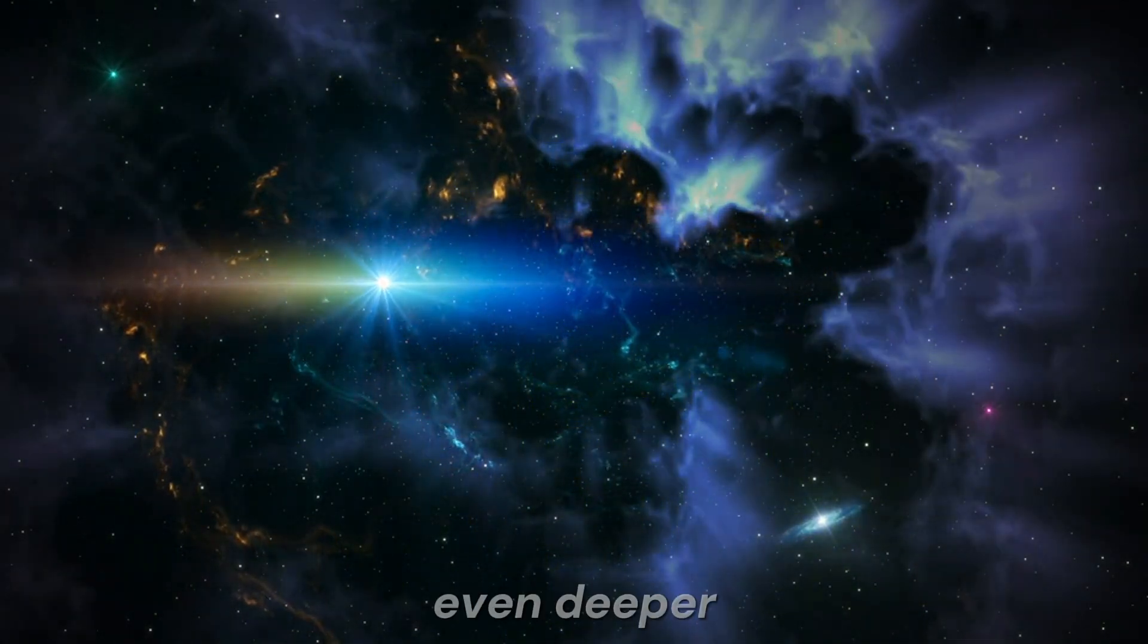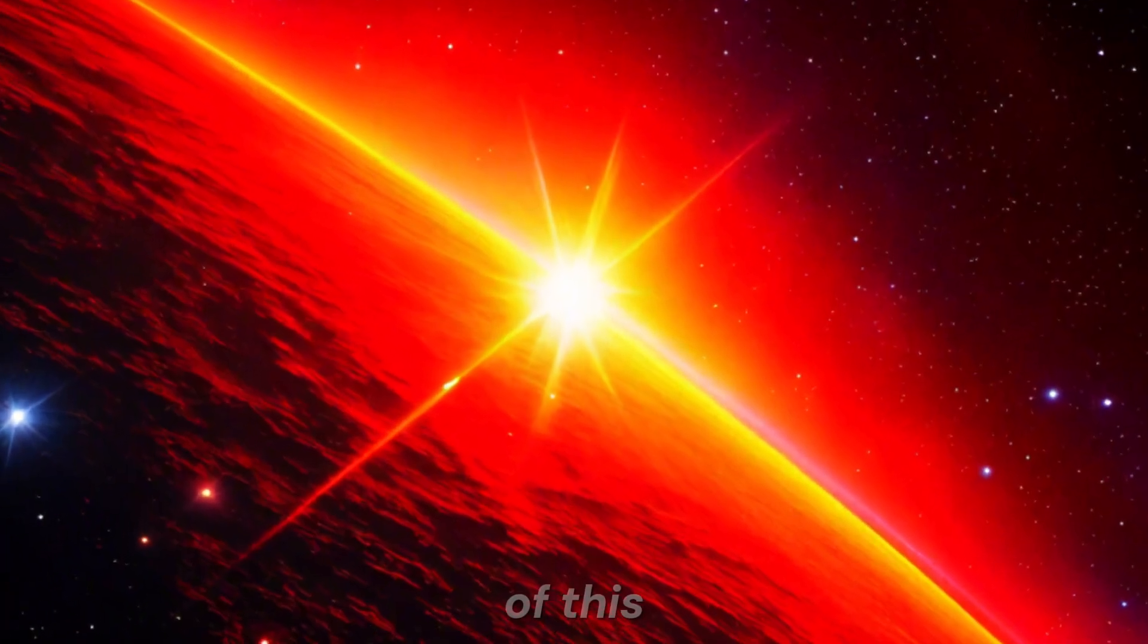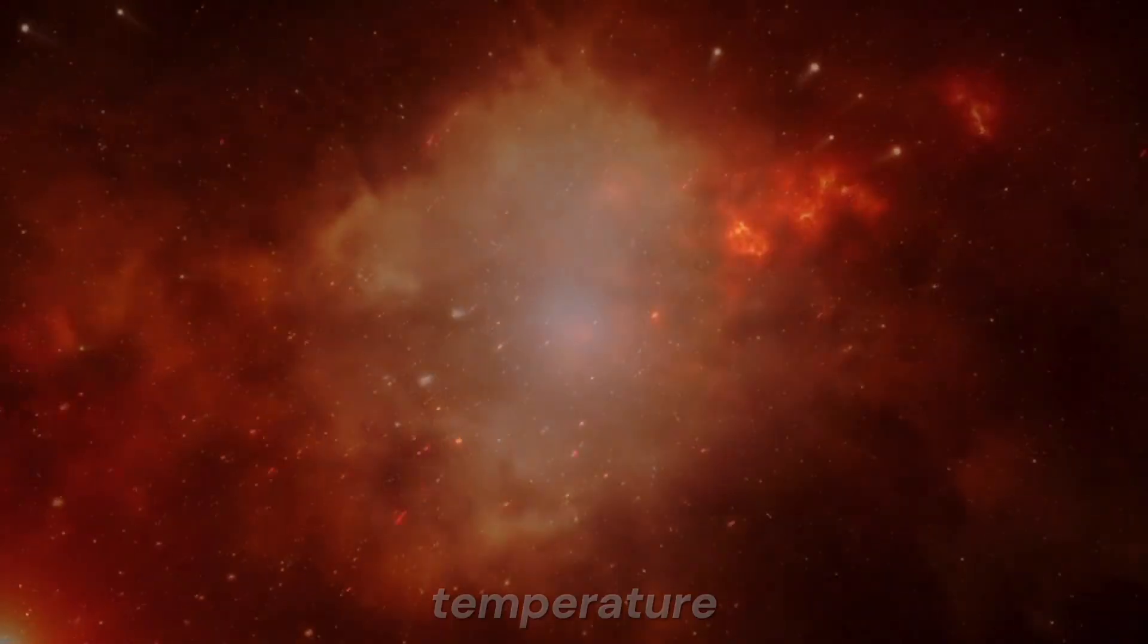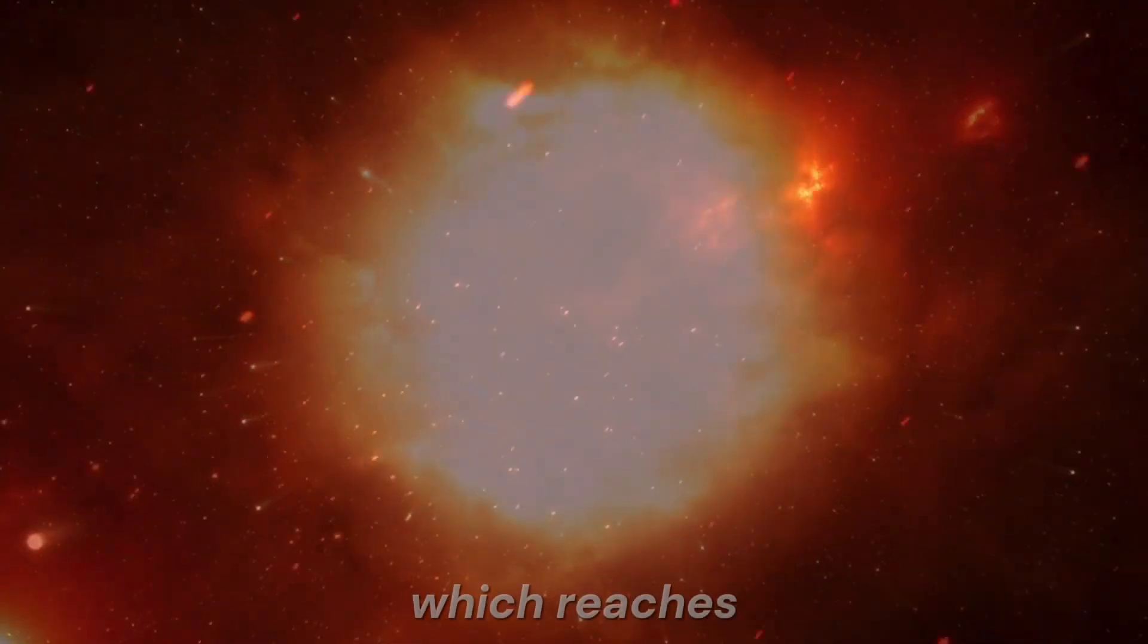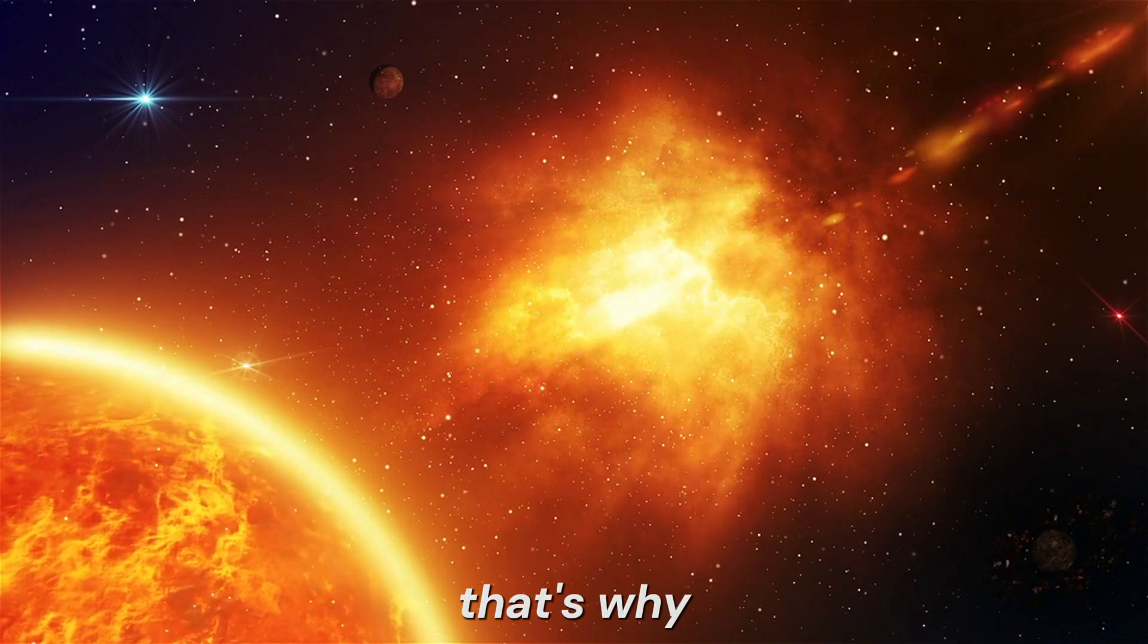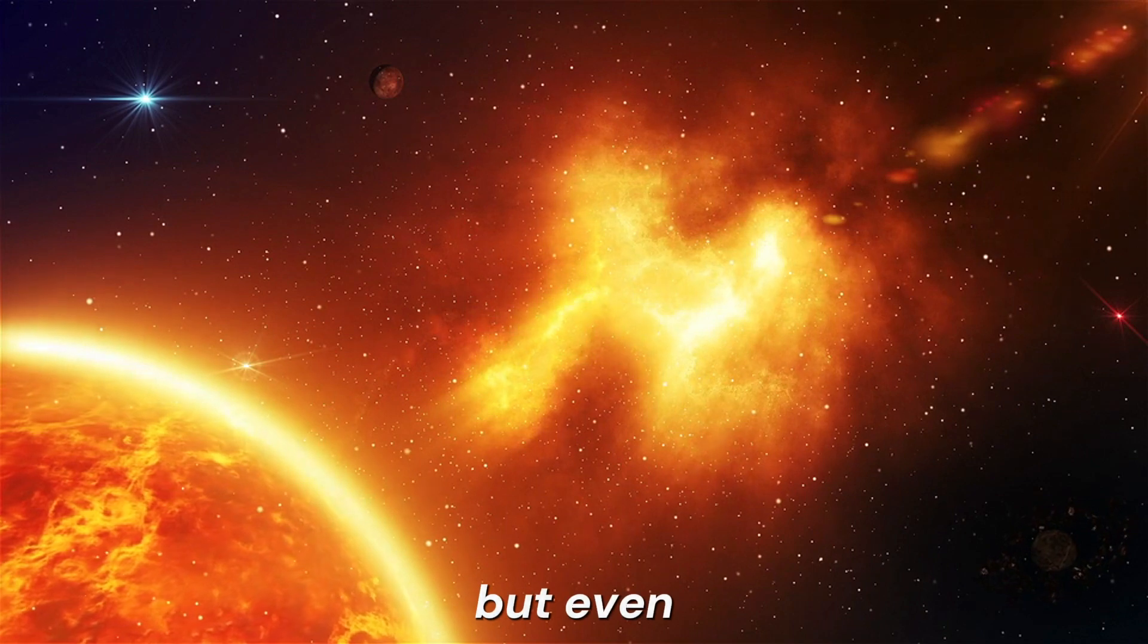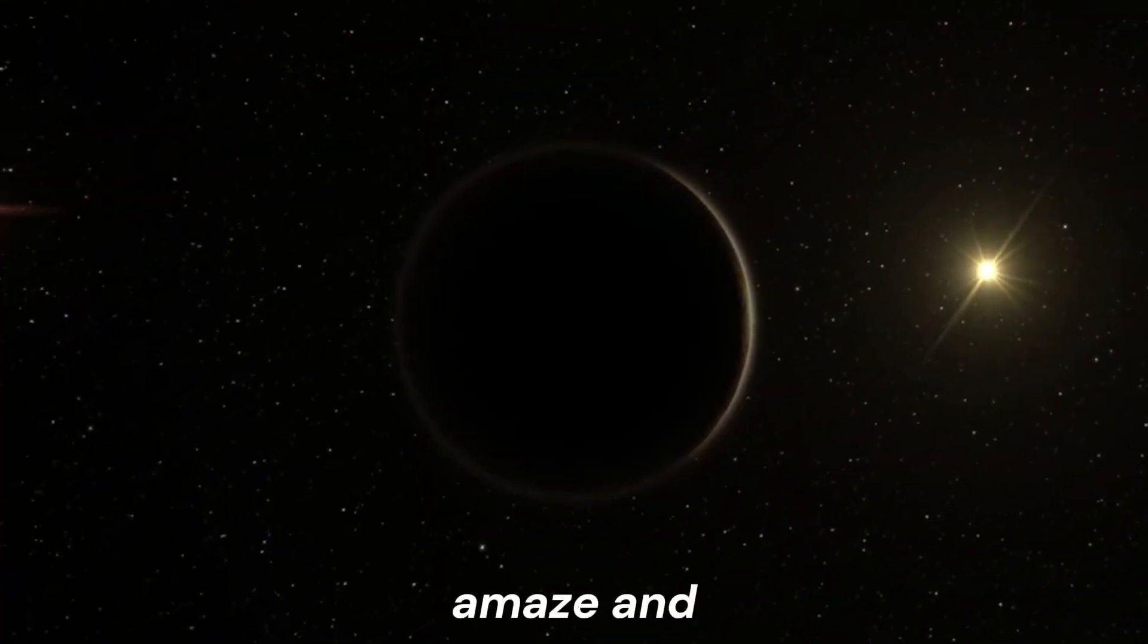Let's delve even deeper into the mysterious world of Betelgeuse and its remarkable characteristics. One of the most notable features of this star is its characteristic red color, stemming from its relatively low surface temperature. Compared to the surface of our sun, which reaches 5,500 Kelvin, Betelgeuse emits much less energy per unit area. That's why, despite being one of the largest stars we know, it appears much dimmer. But even with its modest appearance, Betelgeuse never ceases to amaze and inspire us.